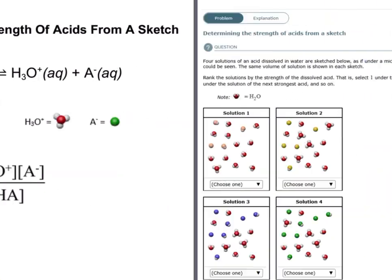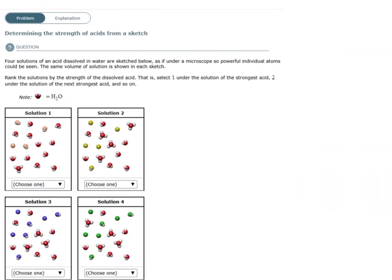Let's take a look at an example. In this example, we have four solutions of an acid dissolving in water, and we're supposed to rank these solutions, one being the strongest acid and four being the weakest acid. So I'd like to start off with my KA expression.